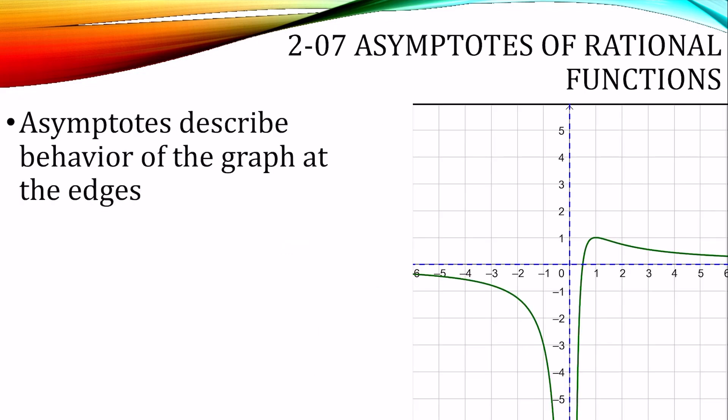Asymptotes are equations that describe the behavior of the graph at the edges. The blue dotted lines here are asymptotes. At the edges of the graph, in the horizontal direction, my graph is going to become similar to the line y equals 0. And at the bottom, my graph will become similar to the line x equals 0.